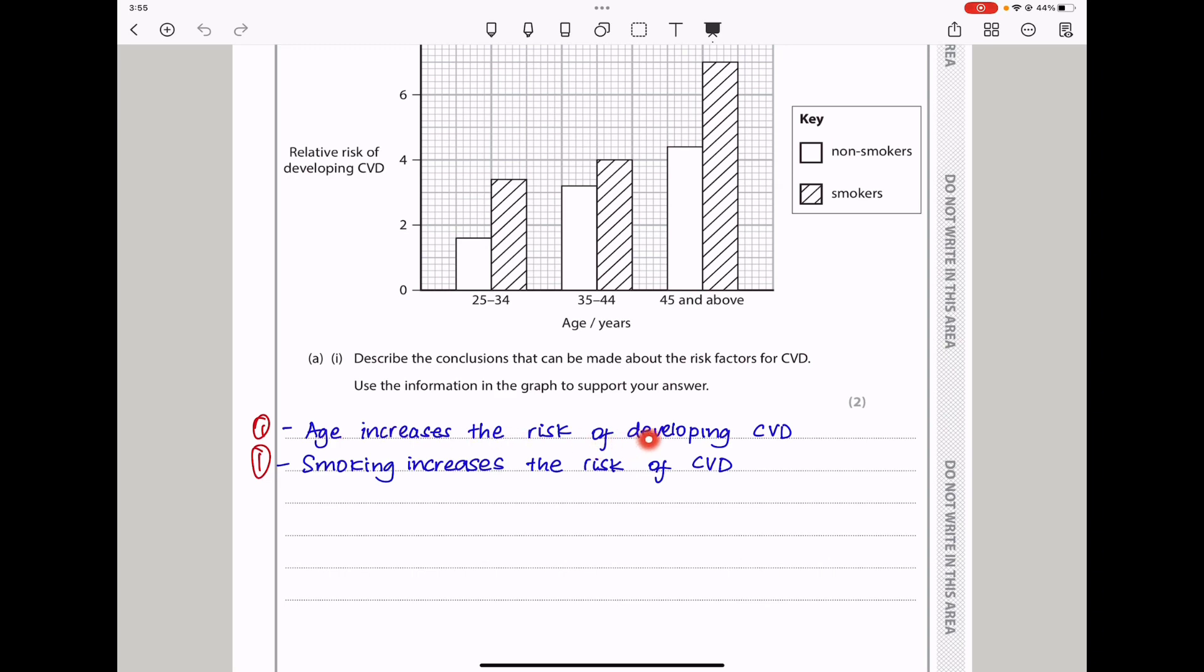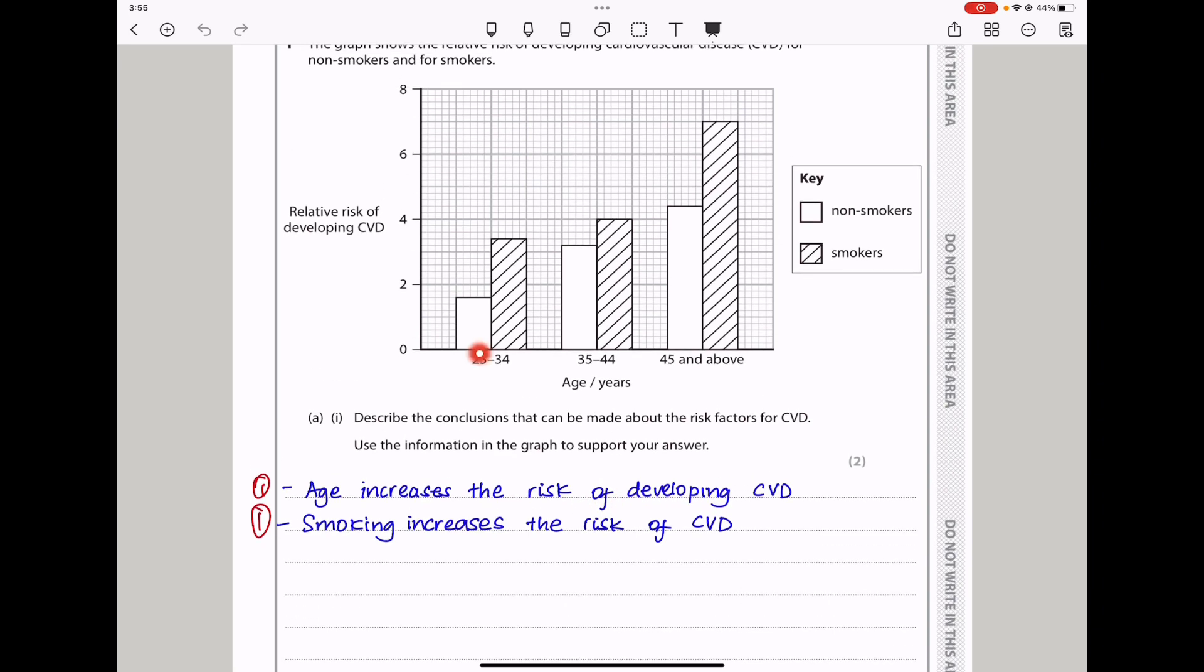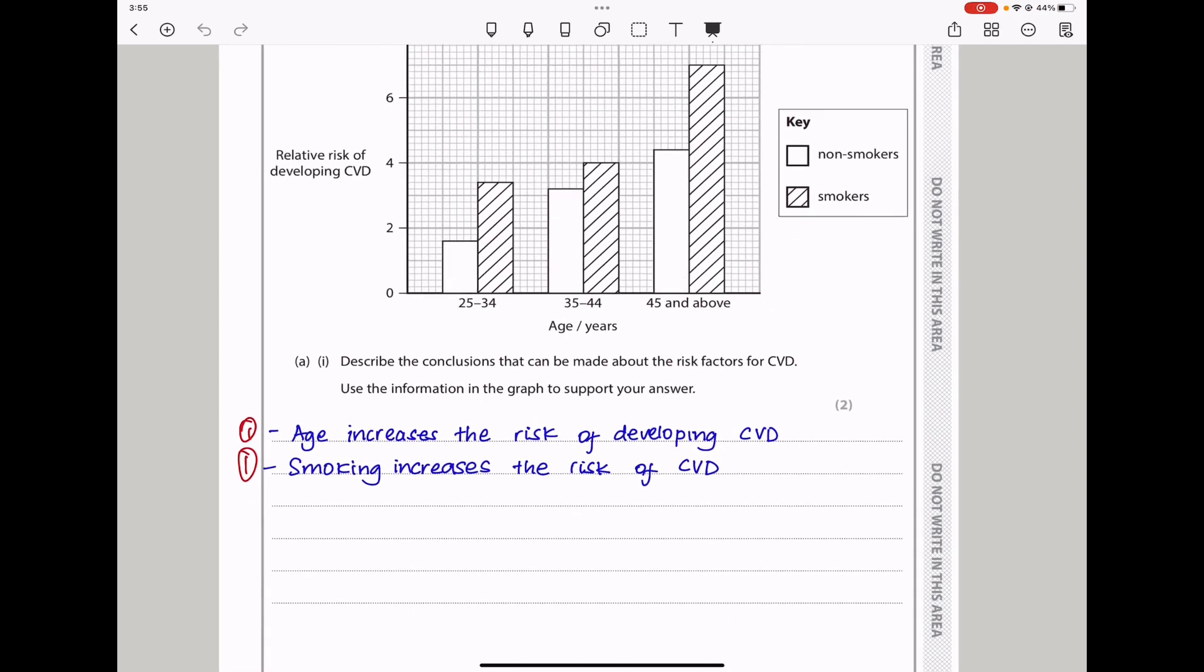So I said age increases the risk of developing CVD. This is true because we can see as age increases, there are more cases. And also smoking increases the risk of CVD. This is true because among smokers, there is a higher risk of having CVD, even within the same age range.